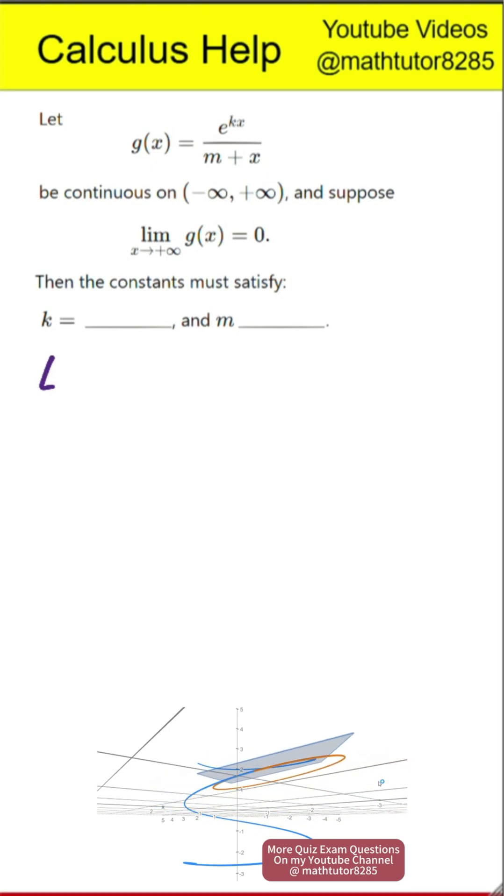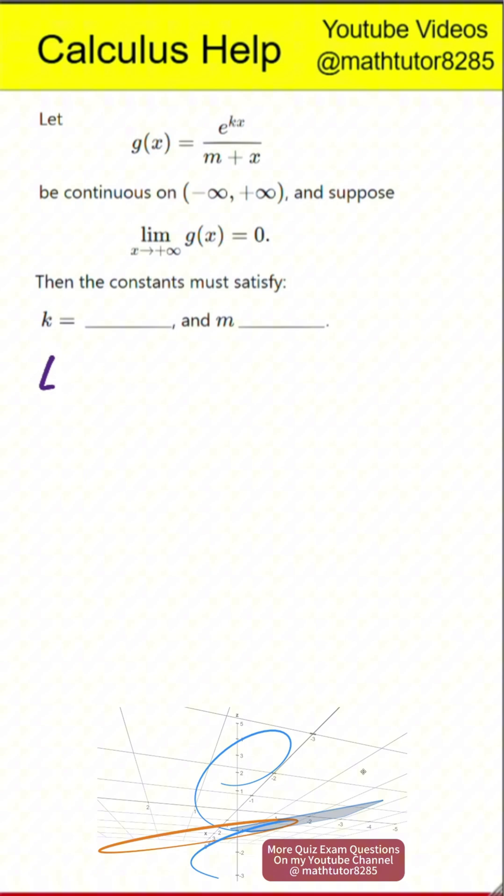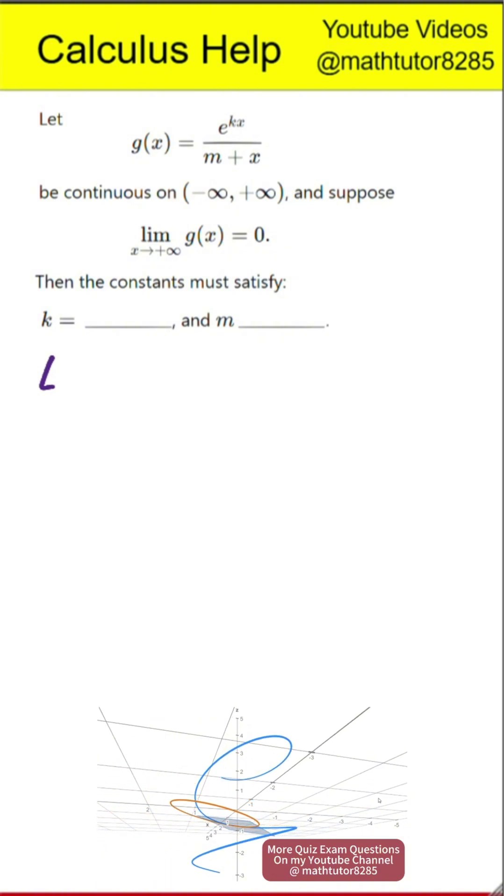Let the function g of x equal exponential of k times x divided by m plus x. This function is continuous on the entire real line. Suppose that the limit of g of x, as x approaches positive infinity, is equal to zero. Then the constants must satisfy.